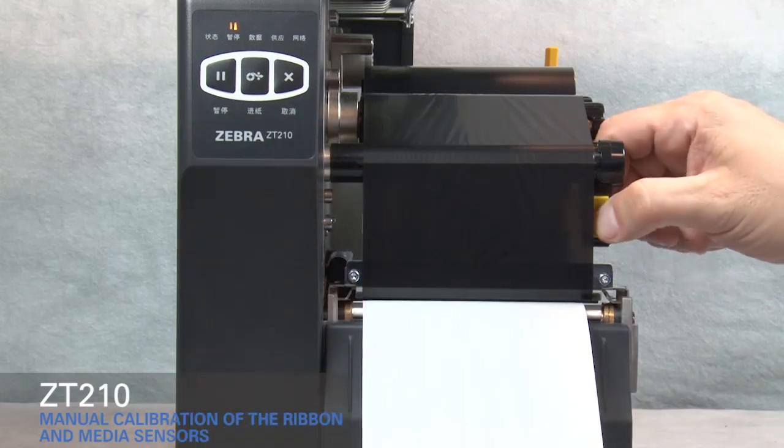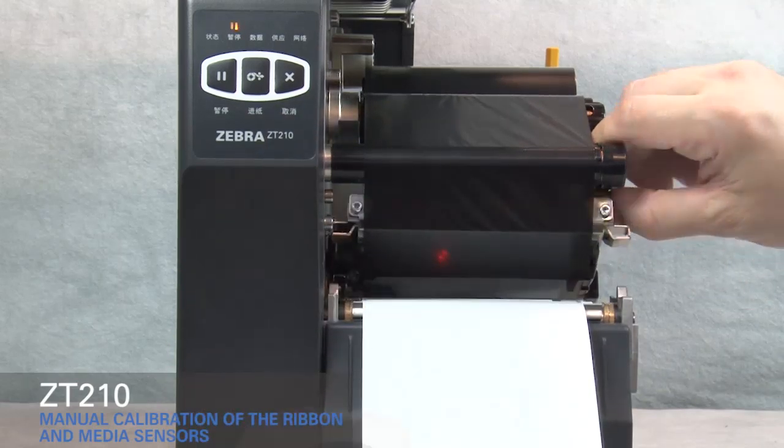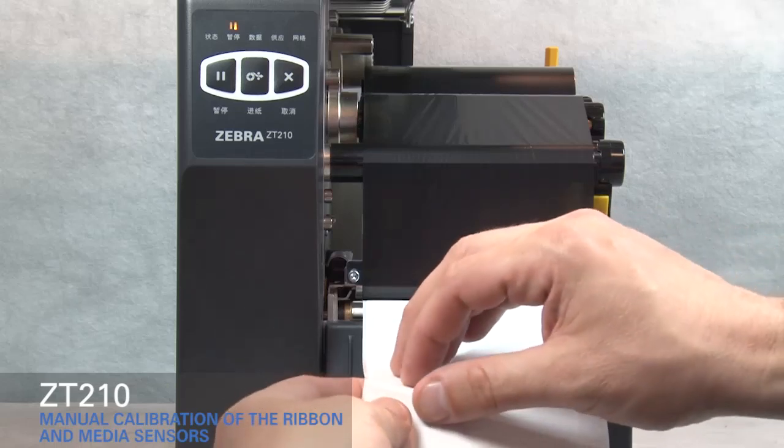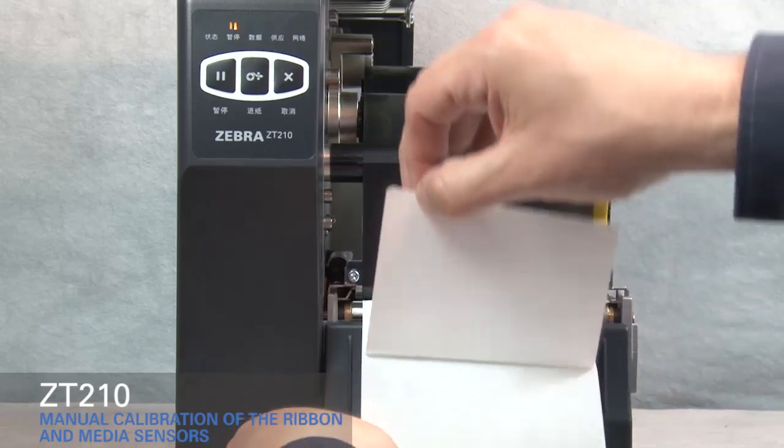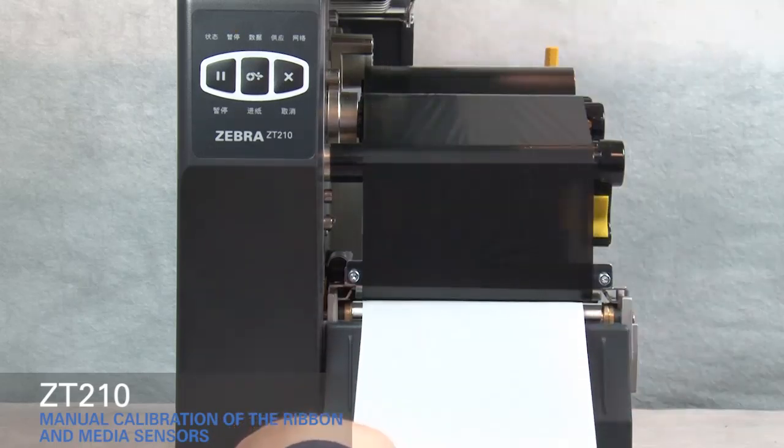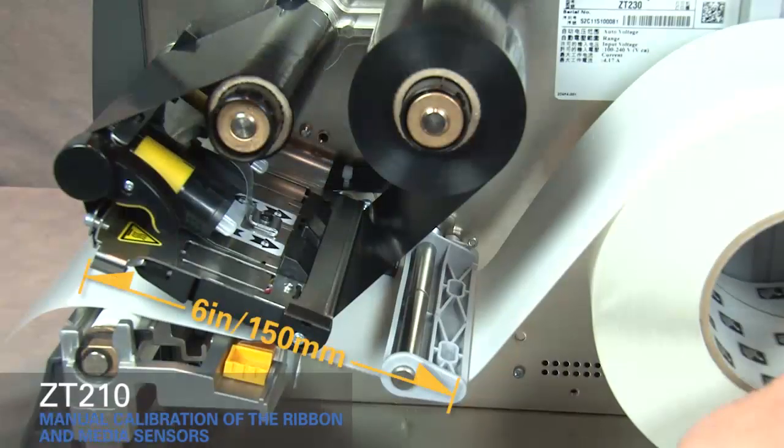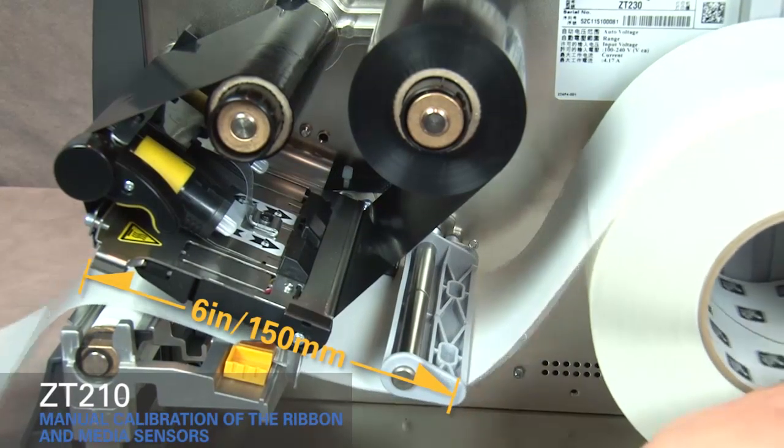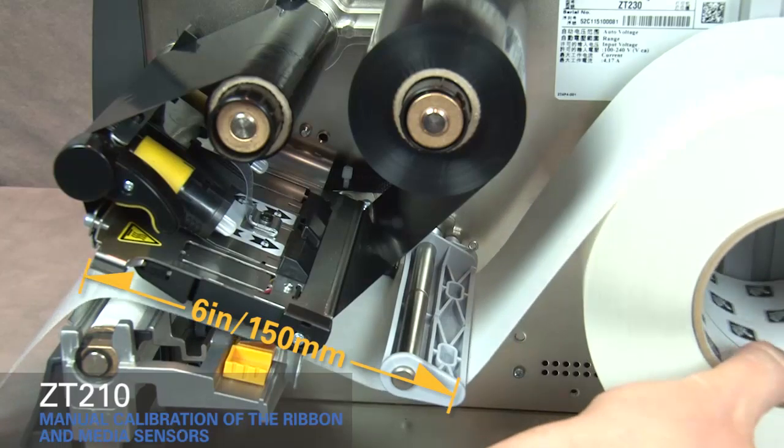Lift the gold printhead lever up to open the printhead. Pull media out and remove about 6 inches or 150 millimeters of labels from the liner. Roll media back into the printer so that only the backing is between the media sensors.